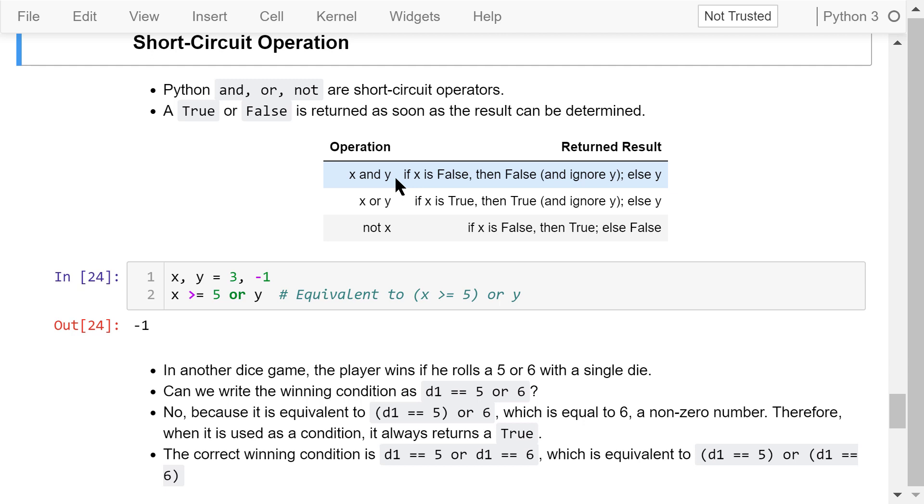This table shows what the short circuit operation means. Consider x and y. In order for this to be true, both x and y must be true. As soon as x is found to be false, we know the entire expression is false. We don't even need to finish evaluating the rest of the expression. If x is true, we just return y's value, no matter whether it's true or false. Similarly, let's consider x or y. As long as one of them is true, the entire expression is true, and we don't need to finish evaluating the rest of the expression. If x is false, we just return y's value, no matter whether it's true or false. For not x, if x is false, then it returns true, else it returns false.